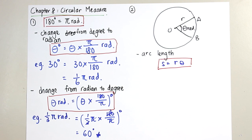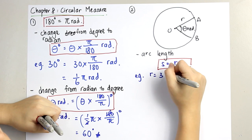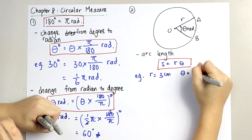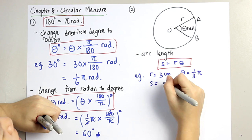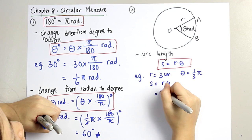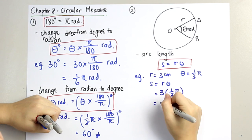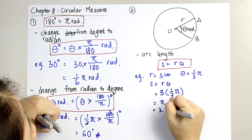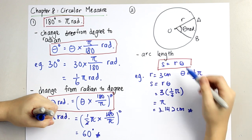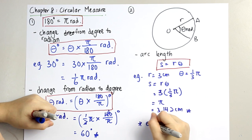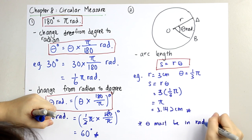Let's go through an example. Let's say we are given r equals 3 cm and theta equals 1 over 3 pi. We find s, the arc length, equals r theta using the formula: 3 cm times 1 over 3 pi, giving us pi, which is approximately 3.142 cm. Note that in finding arc length, theta must be in radian unit.